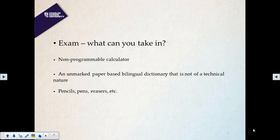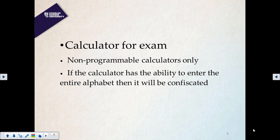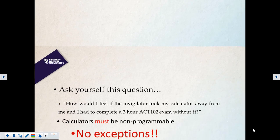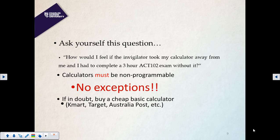Your calculator must be non-programmable. You cannot take a calculator from another student and you cannot use your mobile phone as a calculator. A non-programmable calculator means a scientific calculator where you cannot enter alphabet characters. A cheap basic calculator from Kmart — around ten to fifteen dollars — is perfectly suitable for the exam.